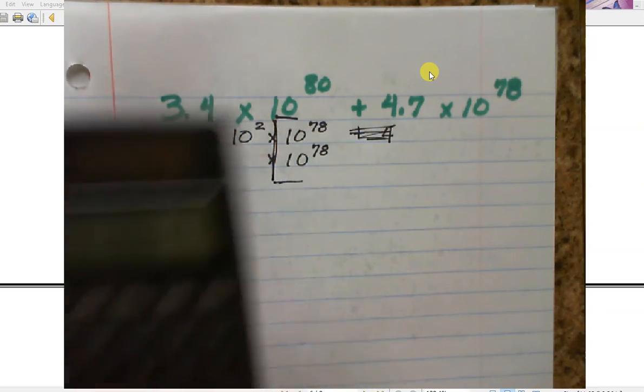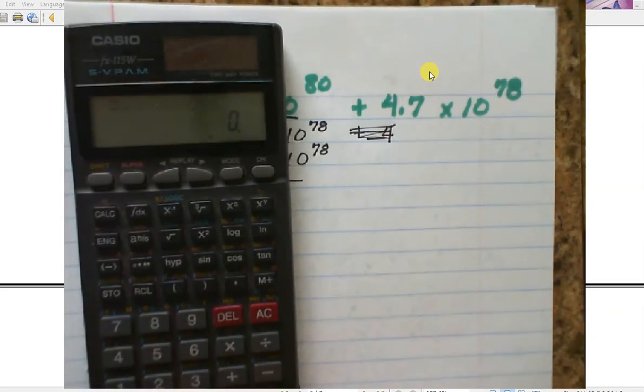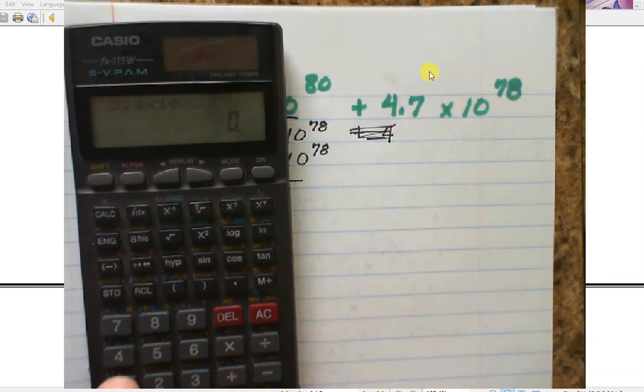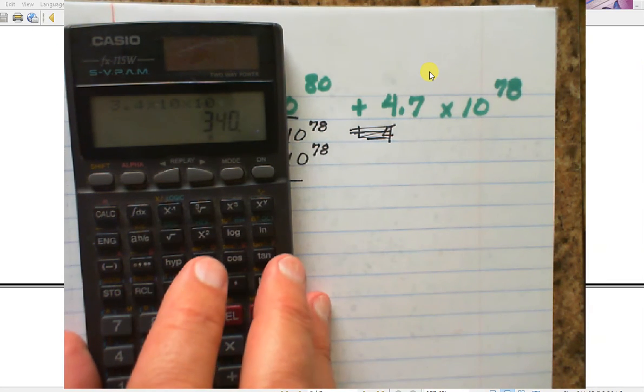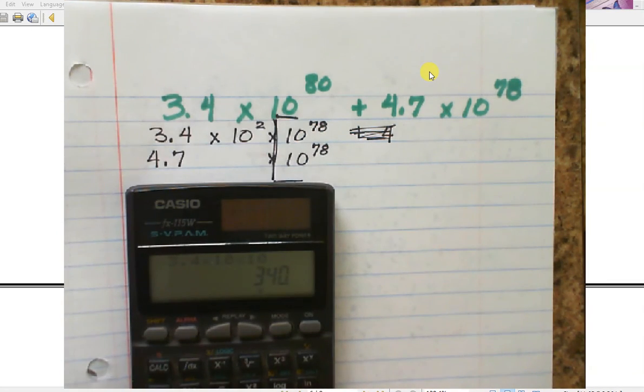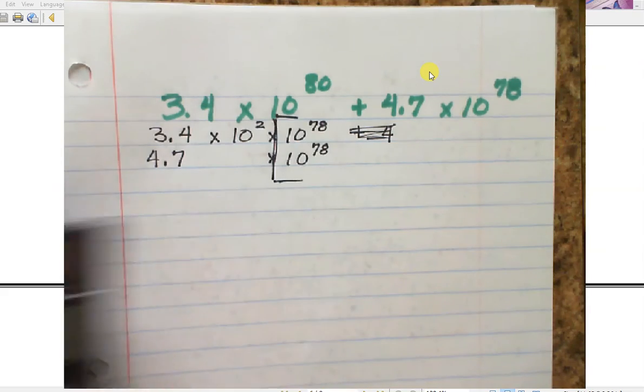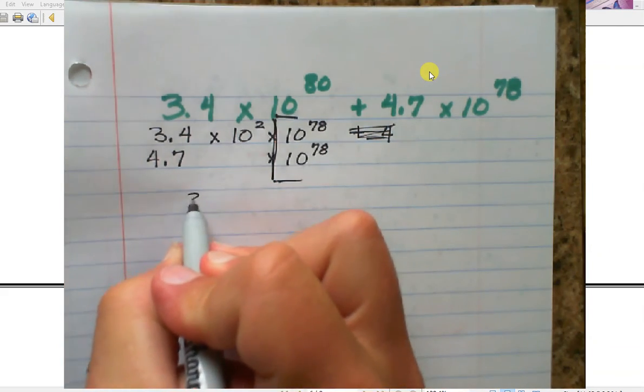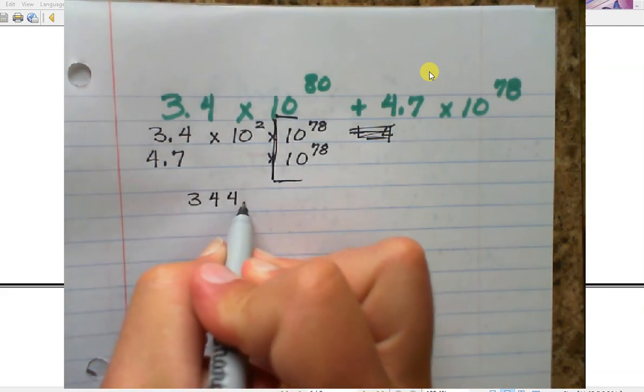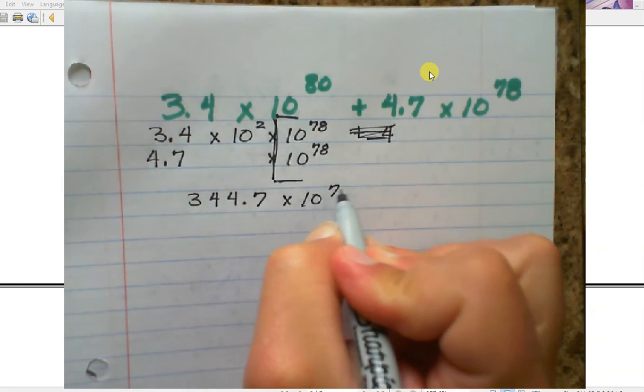So that's 340 plus the 4.7 is 344.7. So what I have is 344.7 times 10 to the 78th.